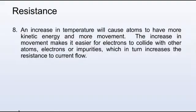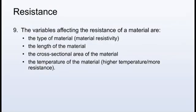An increase in temperature will cause atoms to have more kinetic energy and more movement. The increase in movement makes it easier for electrons to collide with other atoms, electrons, or impurities, which in turn increases the resistance to current flow. The variables affecting the resistance of a material are the type of material or material resistivity, the length of the material, and the cross-sectional area of the material. The temperature of the material is also a factor. Higher temperatures are associated with more resistance.